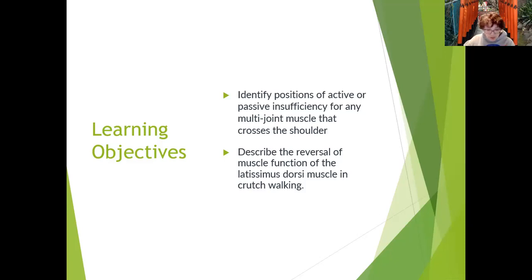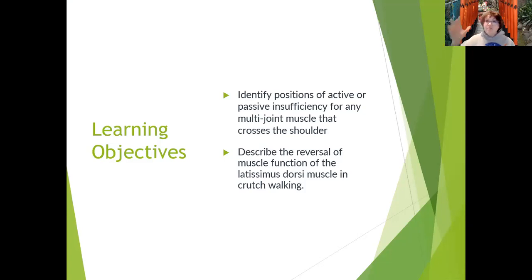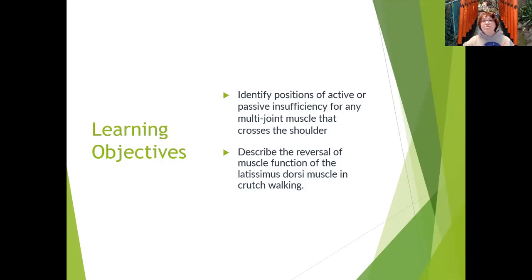There's only one multi-joint muscle in the group of scapular depressors, which is the latissimus dorsi. We won't talk about the active and passive insufficiency of the lats until we talk about the spine in chapter eight, because that's where it really comes in. The latissimus dorsi covers so many joints — spinal joints, the shoulder, and more — so it can be actively or passively insufficient, mostly passively.